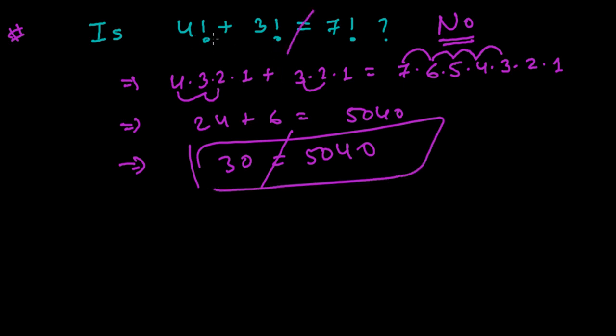So I can say that 4 factorial plus 3 factorial is not equal with 7 factorial. Always, alright? Keep that in mind.